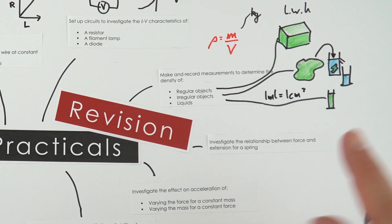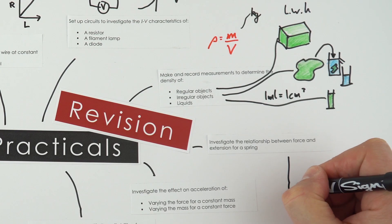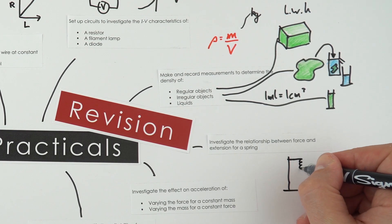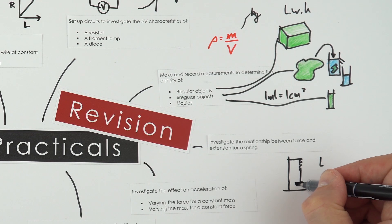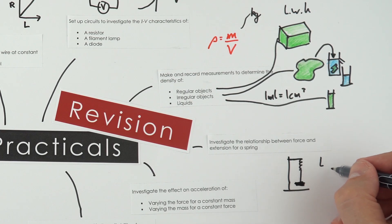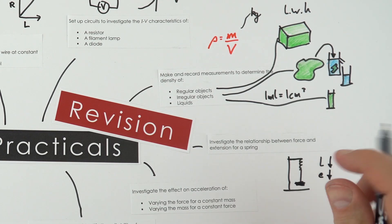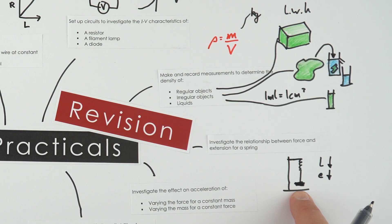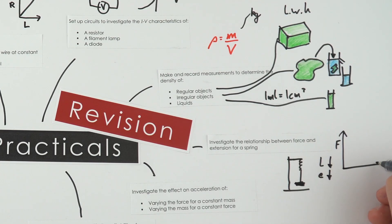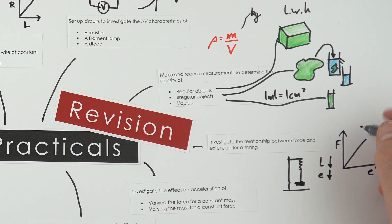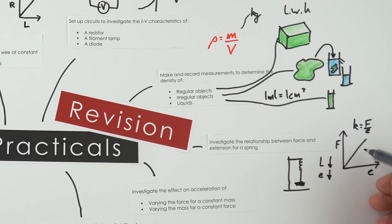To investigate force and extension for a spring, hang a spring from a retort stand, measure its initial length, then add masses to the bottom and measure the extension. Remember 100 g mass is approximately 1 N. Provided you don't exceed the elastic limit, force and extension have a linear relationship. The gradient of the force–extension graph gives the spring stiffness constant k, where k equals force divided by extension.